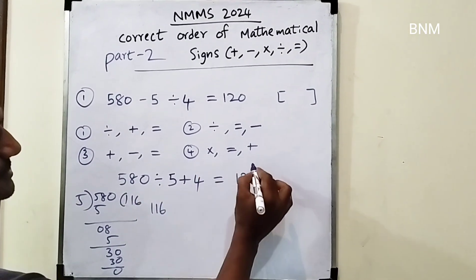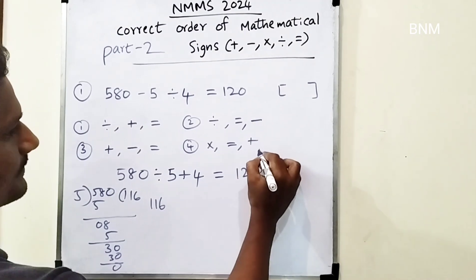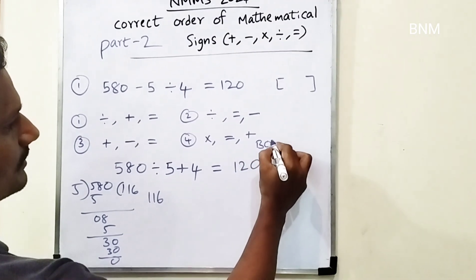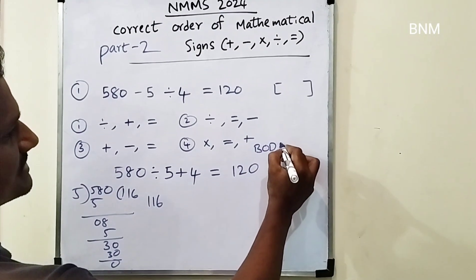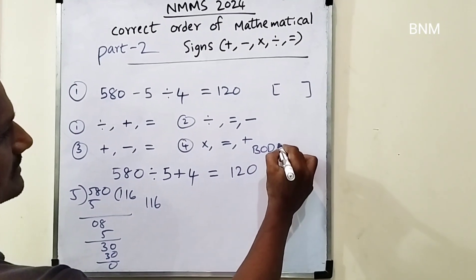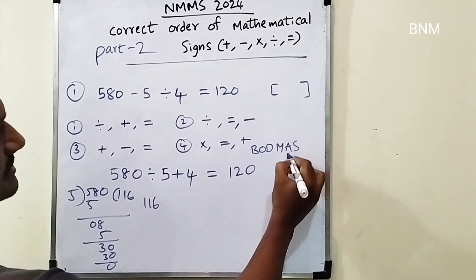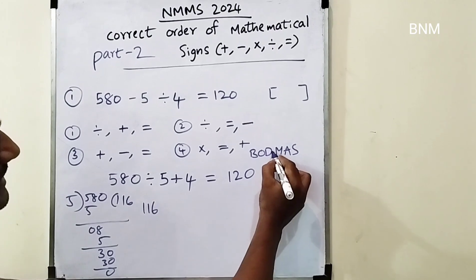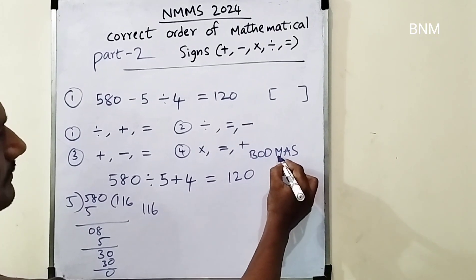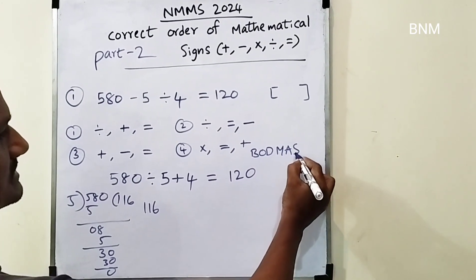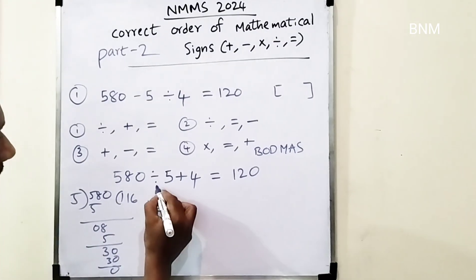In this video, we have to do part 1. In the first part, we have to do division, then multiplication, then addition, then subtraction — division, multiplication, addition, subtraction.